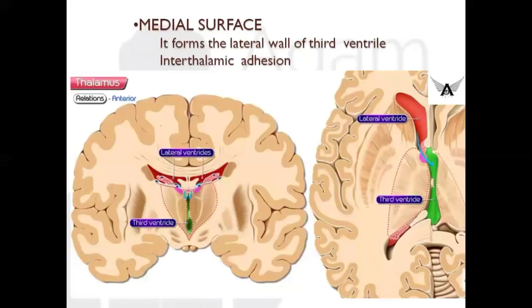Next, moving on to the medial surface relation: this medial surface forms the lateral wall of the third ventricle, which you can appreciate clearly in both pictures. Also in this picture you can appreciate the anterior relations — the internal cerebral vein located at the anterior end, and the interventricular foramen of Monro, which is marked by the blue color arrow in the second picture.